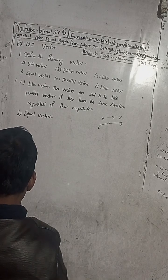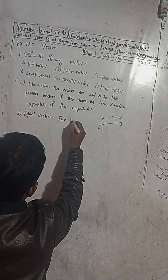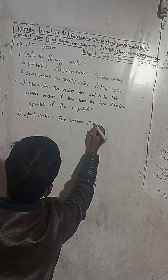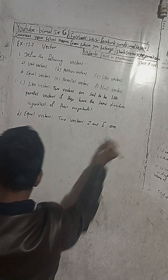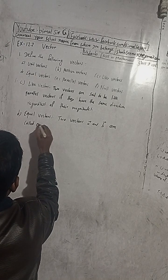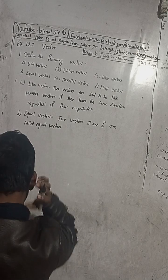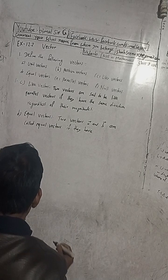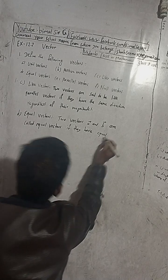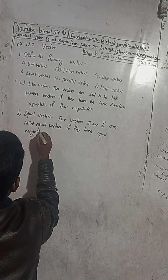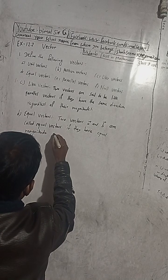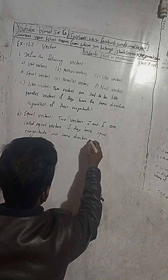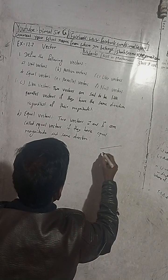Number D is equal vectors. Two vectors — vector A and vector B — are called equal vectors if they have equal magnitude and the same direction.